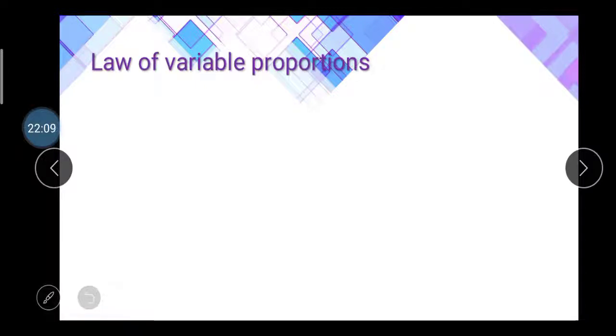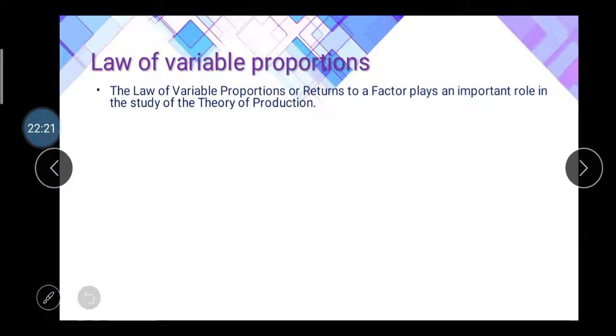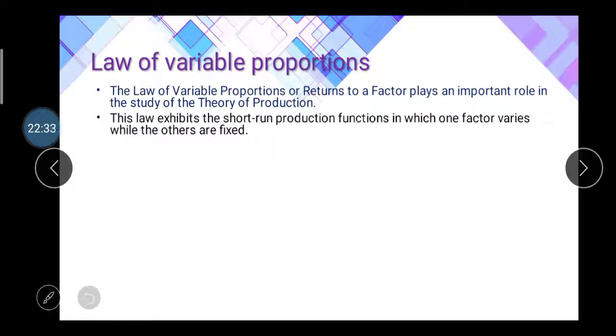The next topic is the law of variable proportion. It's important to distinguish: the law of variable proportion works on the short run, while the law of returns to scale works on the long run — don't confuse the two. In the short-run production function, one factor varies while other factors are fixed, because a company cannot make drastic changes to its production system in the short run.